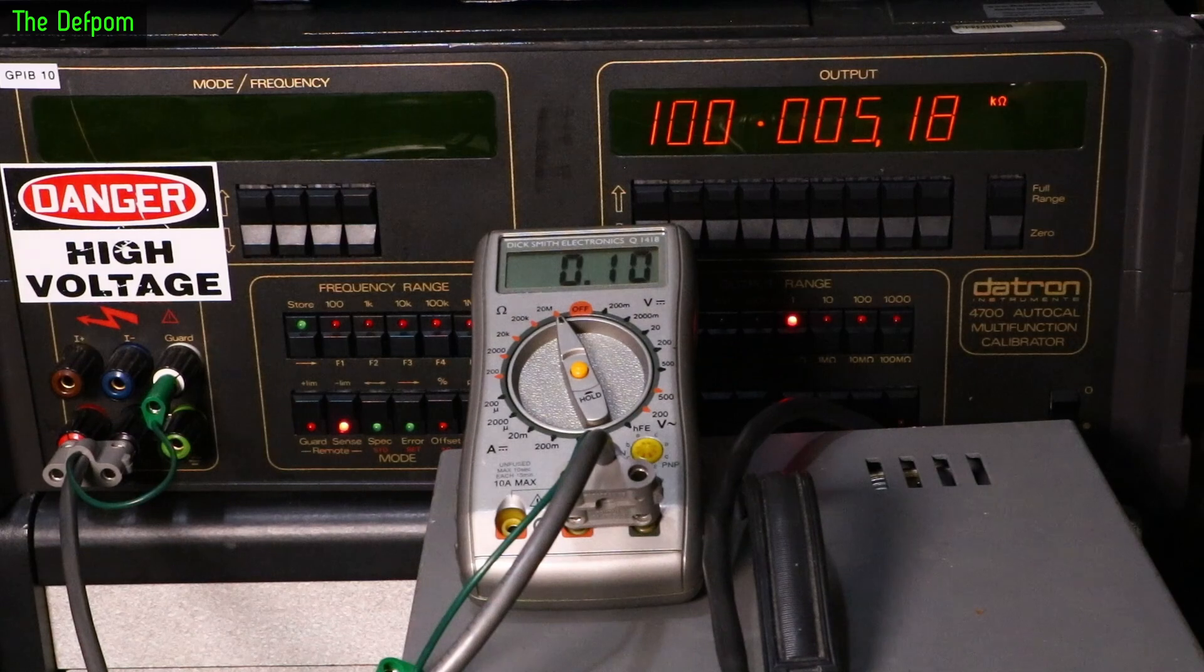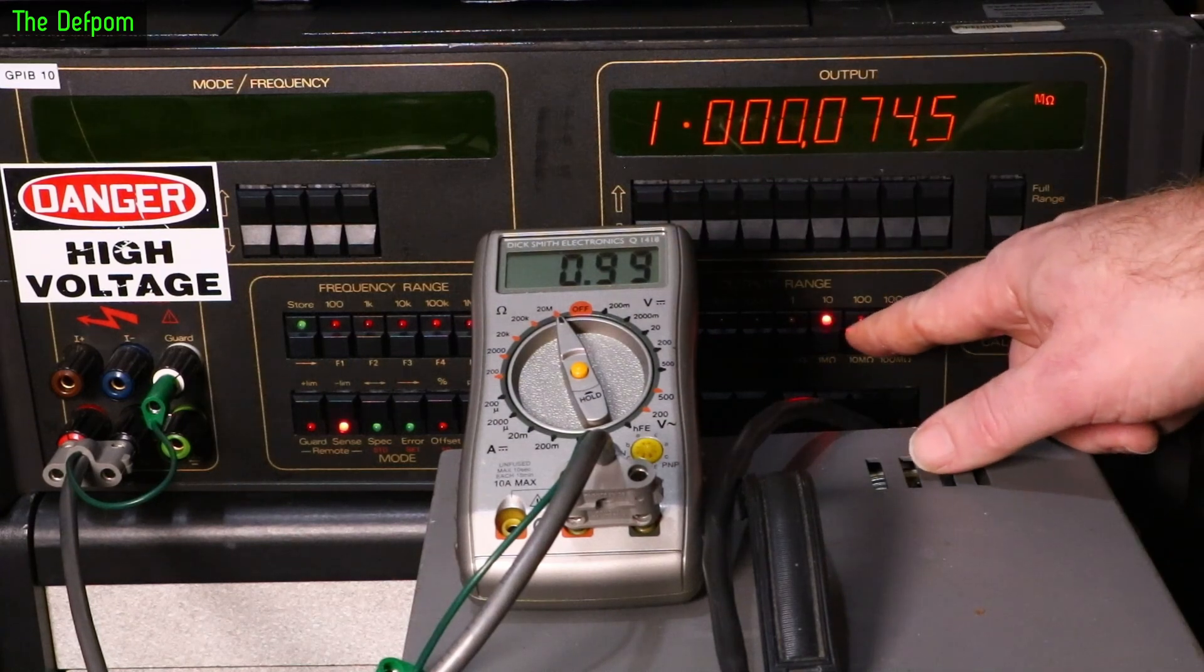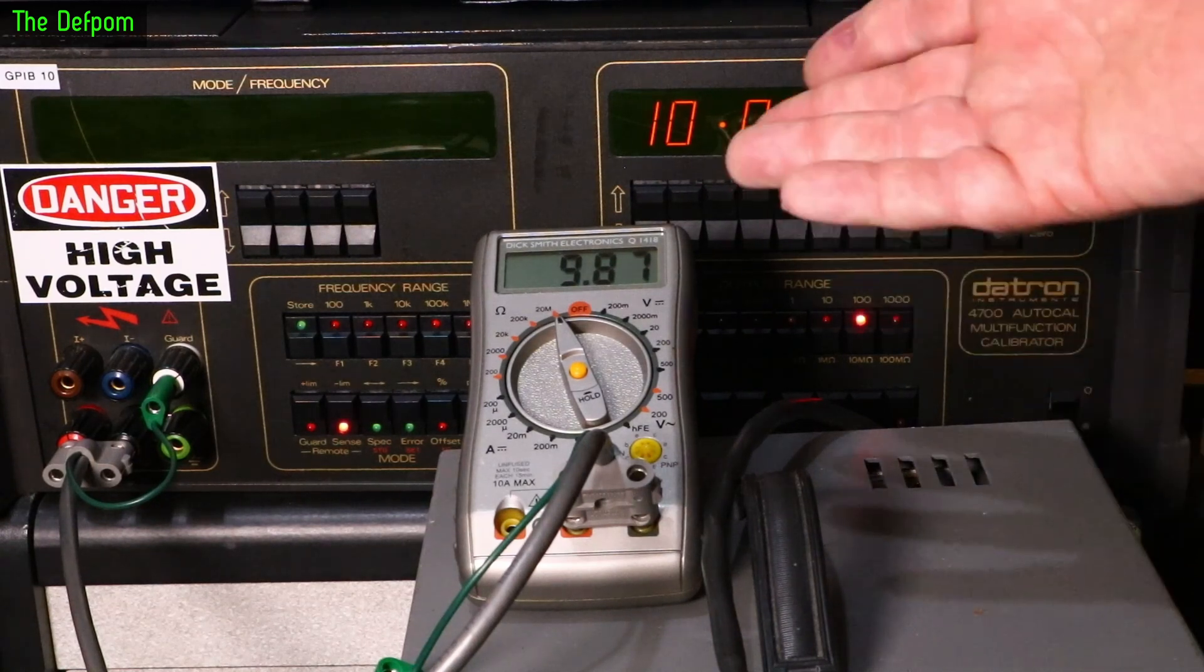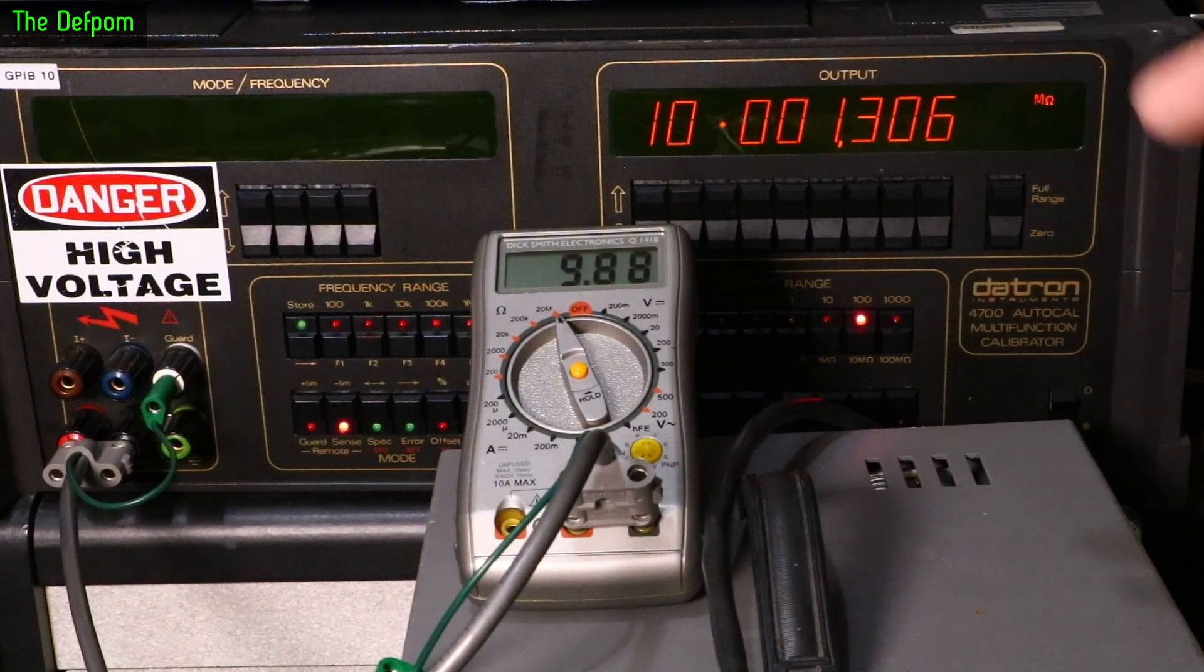There it goes, straight to 20 meg. There's no 2 meg, it's strange, it goes to 20 meg which is interesting. Anyway, 1 meg pretty close, one count out. 10 meg, 13 counts down. It's actually not too bad. I mean all the readings are reading slightly down. So I think there's a little trimmer there which might fix that. I'll try that later on. Now we've got currents to do.